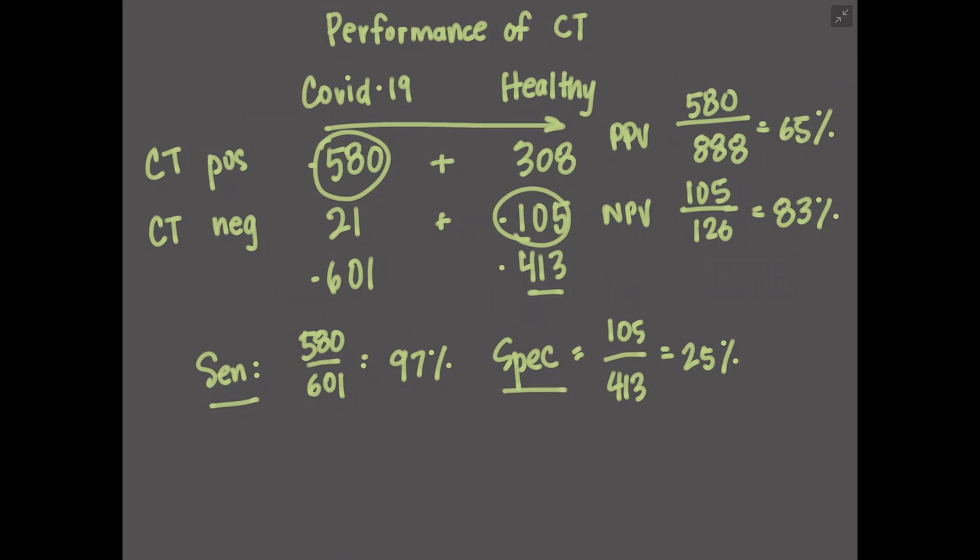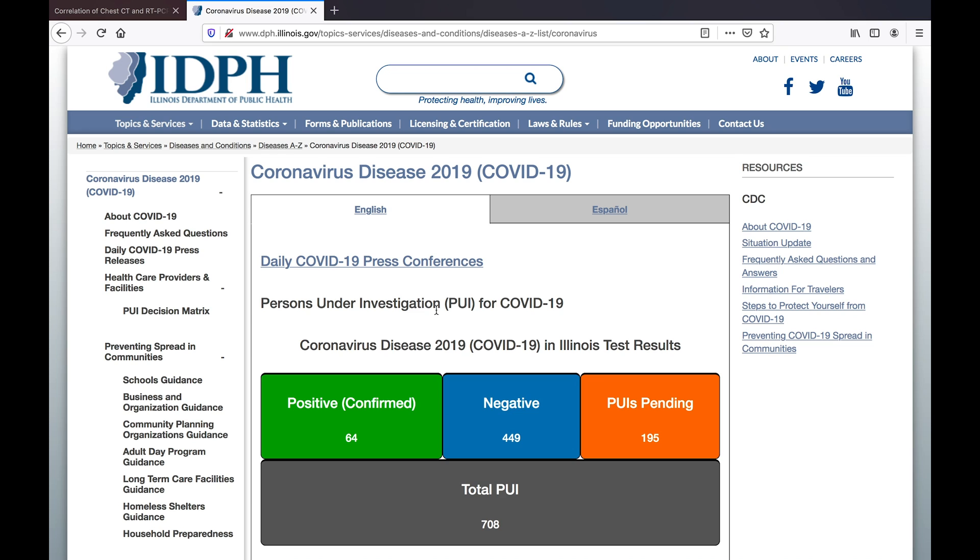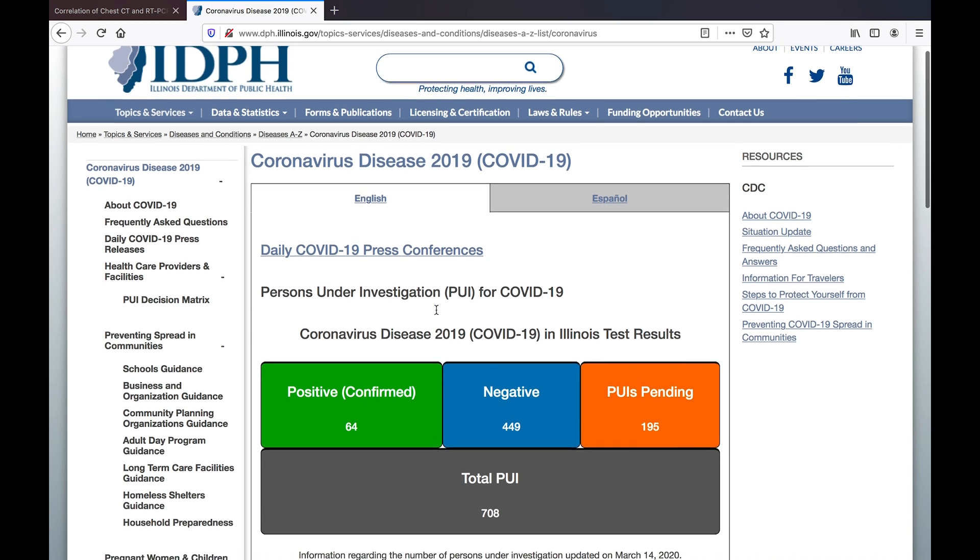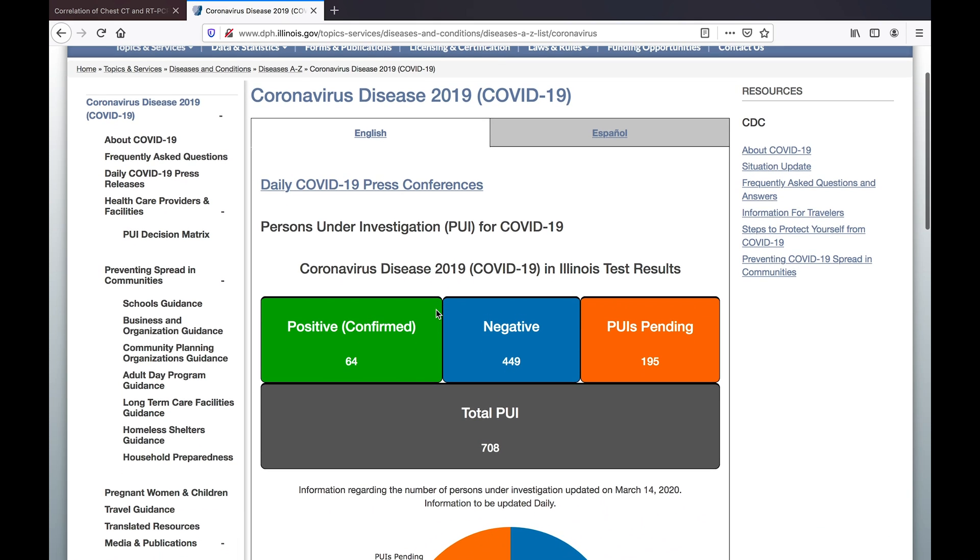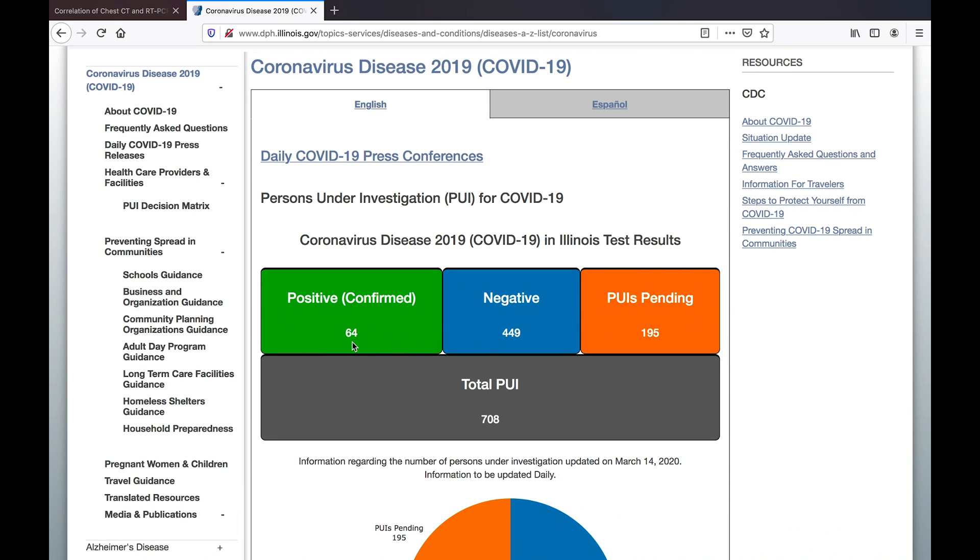I pulled up the Illinois Department of Public Health website because I live in Chicago, and as of today, which is March 15, 2020, we have 64 positive confirmed cases based on PCR, we have 445 negative cases, and we have pending 195 cases.